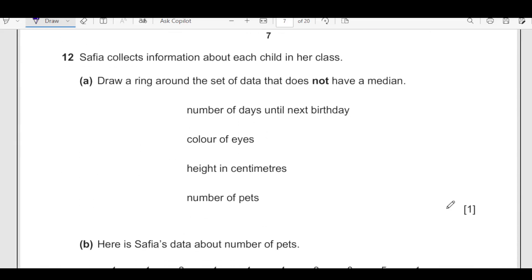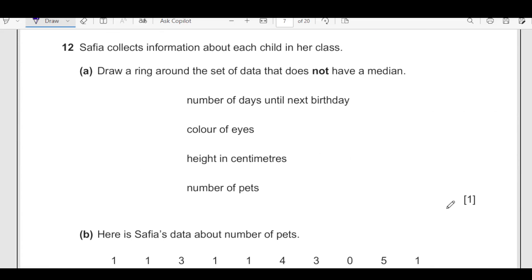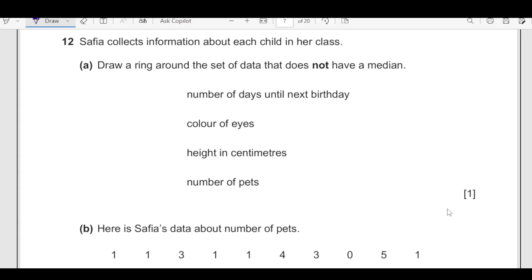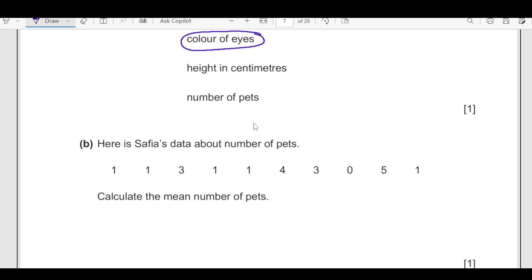Number 12. Safiya collects information about each child in her class. Draw a ring around the set of data that does not have a median. Number of days till next birthday can be counted. Color of eyes, it does not give you any quantitative data. It is not possible to find out the median of this. Color of eyes is not a number. Height in centimeter is also a number. Number of pets will also be a number and can be find out the median. So it is very simple question with common sense.